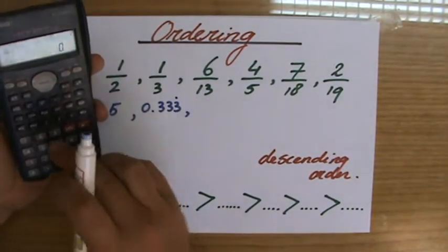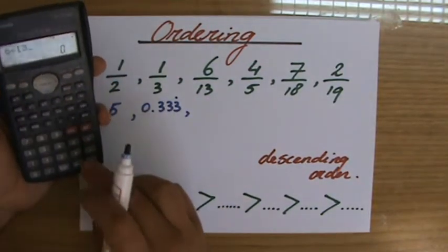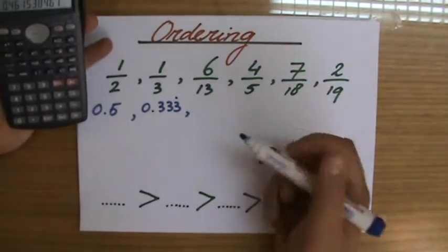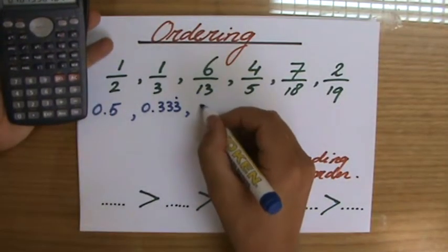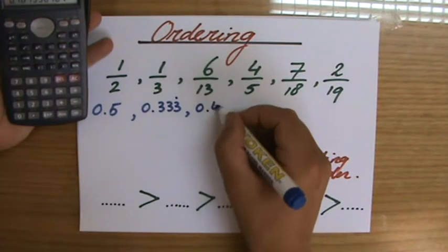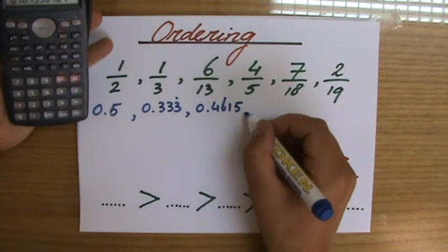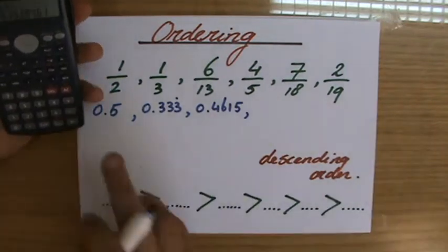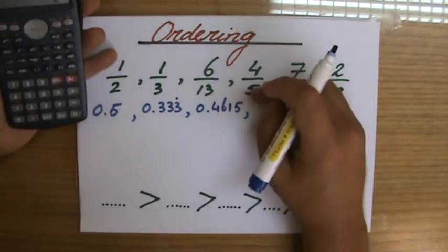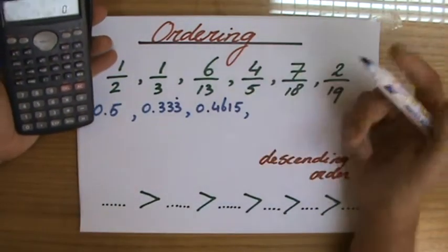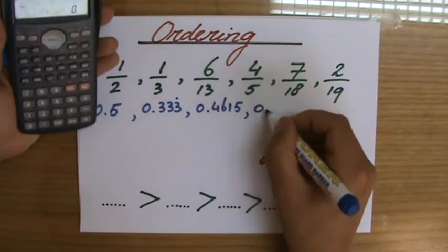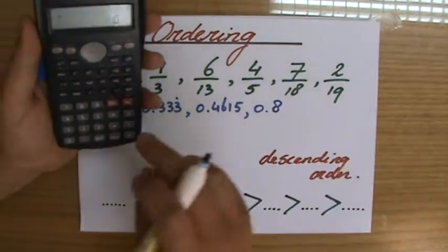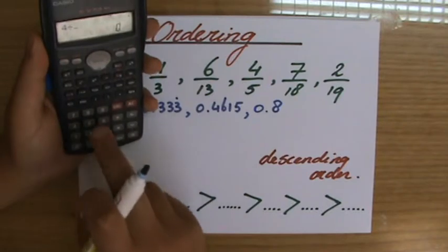Six divided by 13 equals 0.4615 and more decimals, but I'm just going to write down these four. I think that's going to be enough. 4/5 is the same as 8/10, so 0.8.